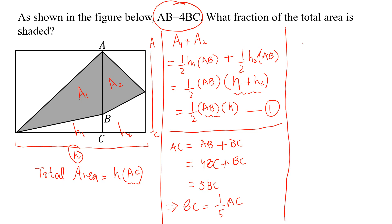Now, we know that AB equals 4BC. So AB equals four-fifths AC.